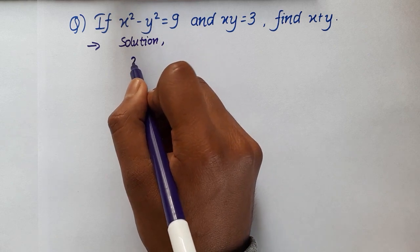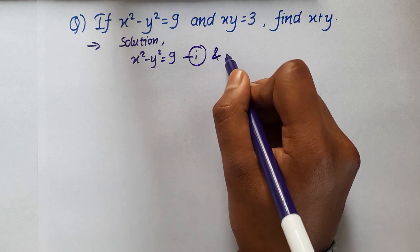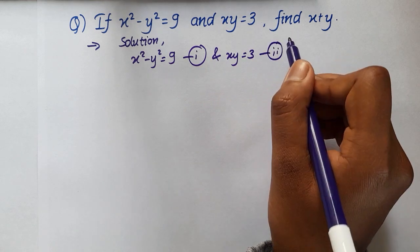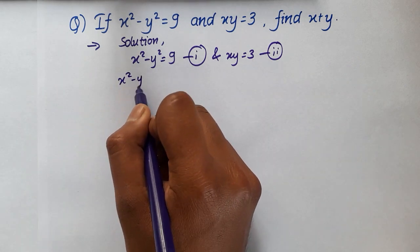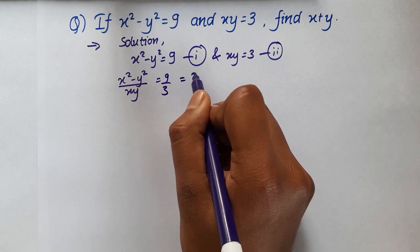We have x square minus y square equal to 9. Let this be equation 1 and xy equals 3. Let this be equation 2. Now if we divide equation 1 by equation 2 then we will have x square minus y square over xy equals 9 over 3 which is equal to 3.